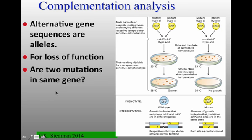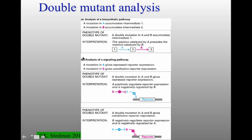Almost all of these mutations are going to be loss-of-function alleles. The question complementation is trying to answer is: are these two mutations in the same gene or not? Another thing you can do with double mutant analysis is look at biosynthetic pathways and signaling pathways — examining what kinds of phenotypes you get when you generate double mutants.